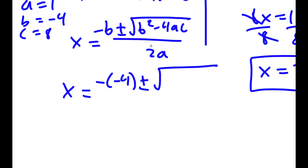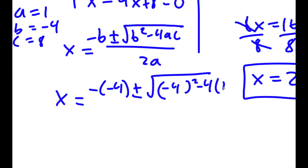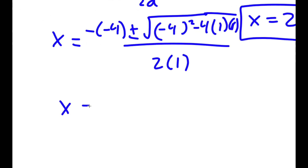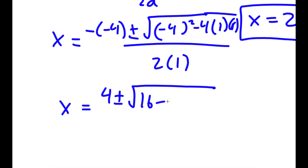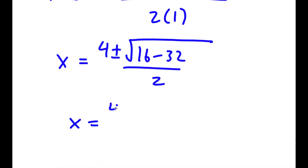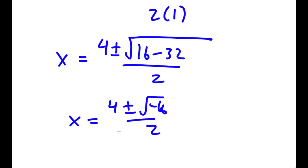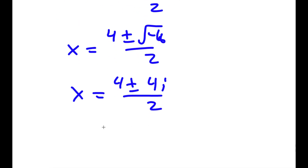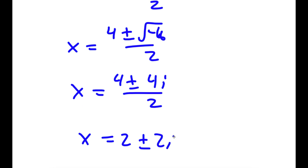So this is equal to 4 plus or minus the square root of b squared — so negative 4 squared — minus 4 times a, which is 1, times c, which is 8, all over 2a, so 2 times 1. This is equal to 4 plus or minus the square root of 16 minus 32 over 2, which is equal to 4 plus or minus the square root of negative 16 over 2, which is equal to 4 plus or minus 4i over 2, which is equal to 2 plus or minus 2i.